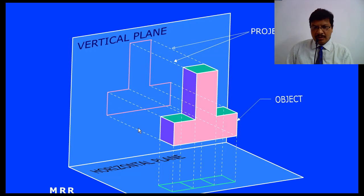When these projectors are meeting this plane, we will get some points on the reference plane. And if you are joining these points in a correct sequence, then whatever shape we will get, that is called as projection.